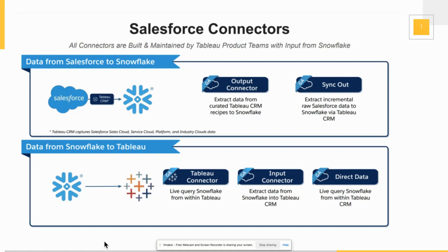Anyone who has Tableau today can use that connector to query Snowflake and build visualizations and dashboards. There is also a second piece: the input connector. If you want to extract data from Snowflake into Tableau CRM — say you have ERP data or data from other sources in Snowflake that you want available in Tableau CRM for your sales teams — you use the input connector to extract that data from Snowflake and write it into Tableau CRM. And the last connector is the direct data connector, which allows live querying of data that sits in Snowflake from right within Tableau CRM.